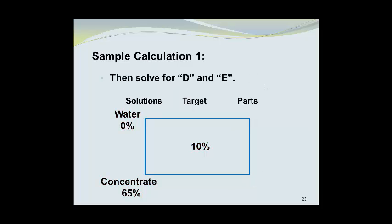Then we can solve for D and E. D will equal 65 minus 10, which is 55, and notice that we don't put the percent signs in here. The value for E will be given by 10% minus 0, which is 10.